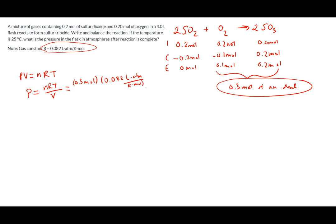The temperature is 25 degrees Celsius. To convert that into Kelvin, it's 25 plus 273, which gives us 298 Kelvin. Now we divide that by the volume. We are told that the volume of the flask is 4 liters, 4.0 liters.